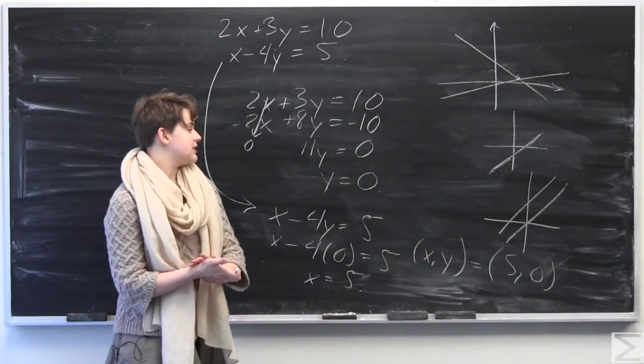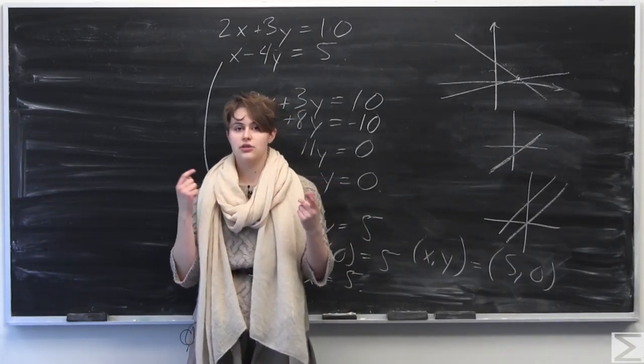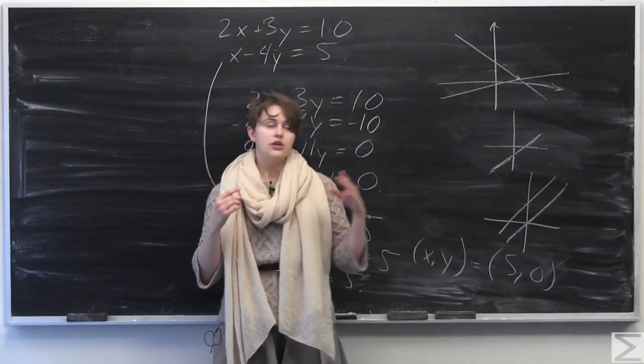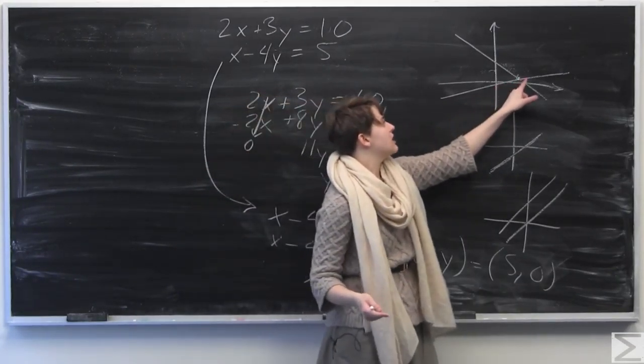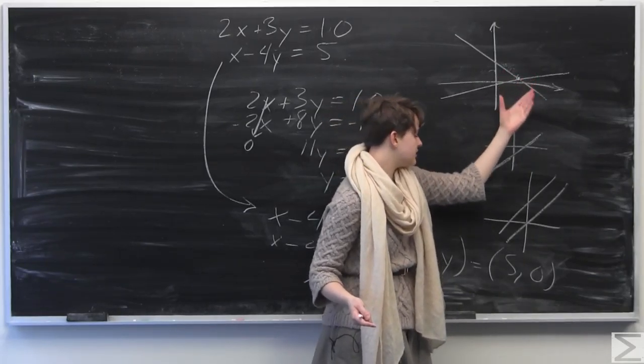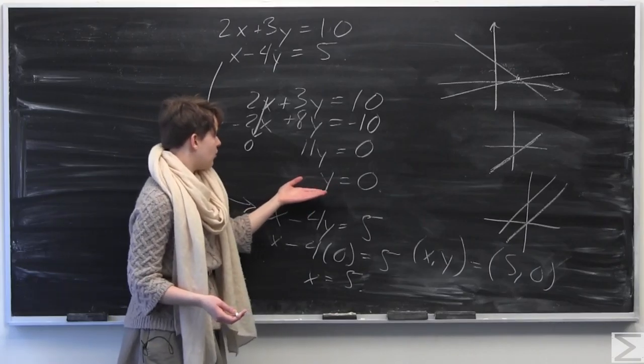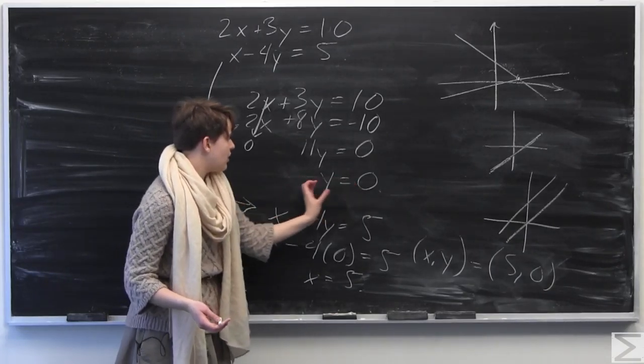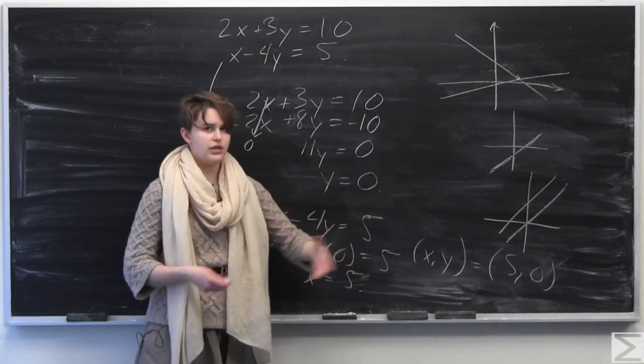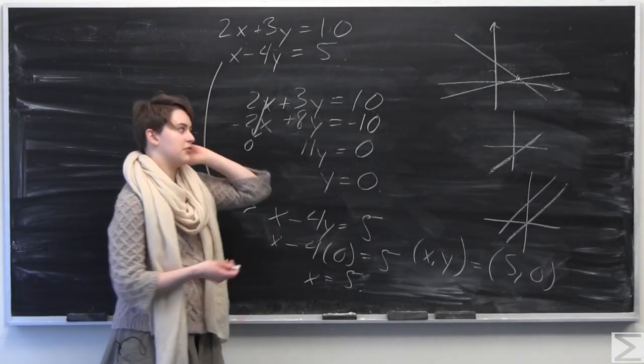So geometrically, this means that we have a consistent system that intersects at one point. So two lines, two separate lines intersecting at one point, something like this, except that 5, 0. If we had gotten something like 0 is equal to 1 or 0 is equal to something that's not 0 over here, that means we would have an inconsistent system of parallel lines.